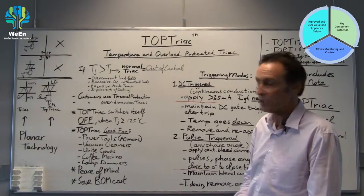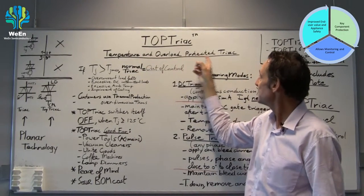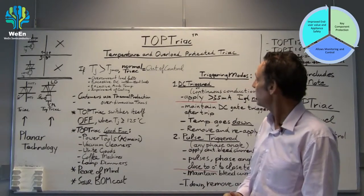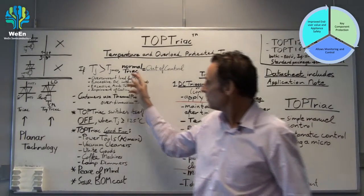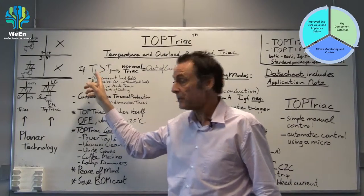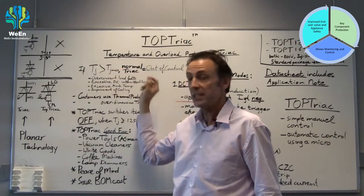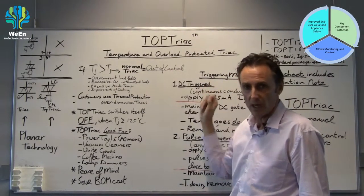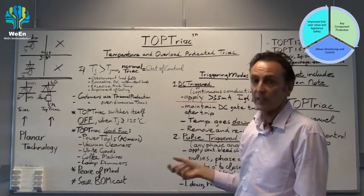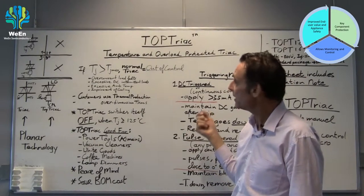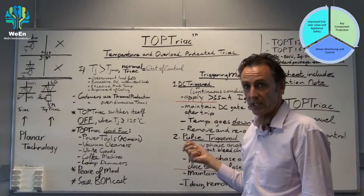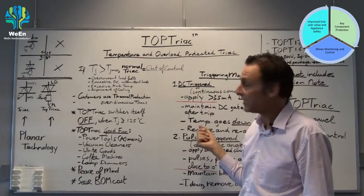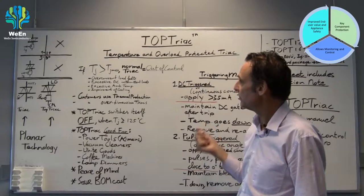TOP TRIAC means temperature and overload protected TRIAC. Why would we need a temperature and overload protected TRIAC? A normal TRIAC, if the junction temperature exceeds the maximum junction temperature that you will find in the datasheet, will go out of control. It means if you take away the gate signal the TRIAC will continue to conduct and you cannot switch it off, and then if you don't do any extra protection it will go on fire.